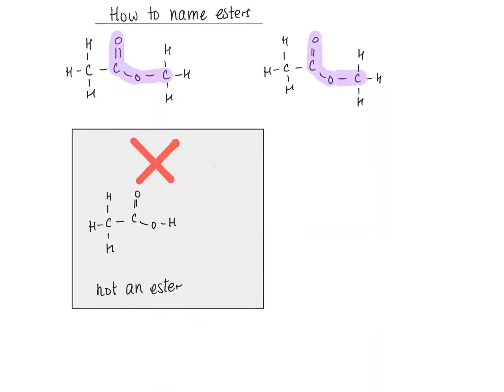Sometimes people get confused about the difference between an ester and something else. In this example, this is a carboxylic acid — specifically, it's ethanoic acid. This isn't an ester because this oxygen here is bonded to a hydrogen. For it to be an ester, this oxygen has to be bonded to a carbon. So this is not an ester; it's a carboxylic acid.